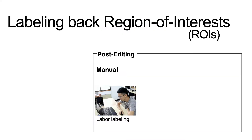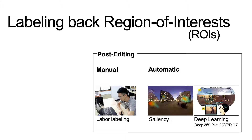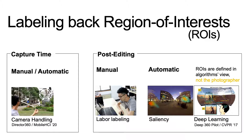One way to introduce region of interest back is in the post-editing phase, manually with labor-intensive work, or automatically with a machine learning approach. We introduce the novel concept of camera handling, which allows the user with the 360 camera to address the user's attention in the scene at the capture time.